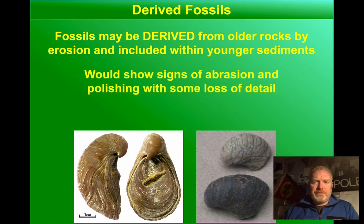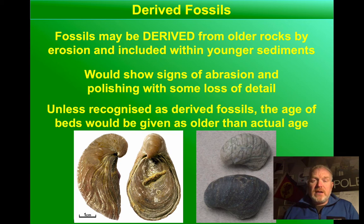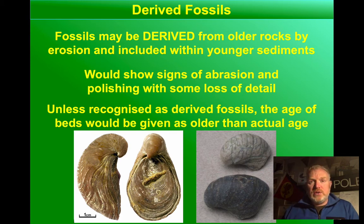There are a few key features. Firstly, the fossil will show some signs of being eroded and transported. There will be a loss of detail — it will be rubbed, polished, abraded. It may even be broken up. The fossil acts as a clast like any other one. Also, the other thing that would flag up a fossil as being derived is that it didn't fit — whether that's in terms of age or in terms of the environment in which it was found.